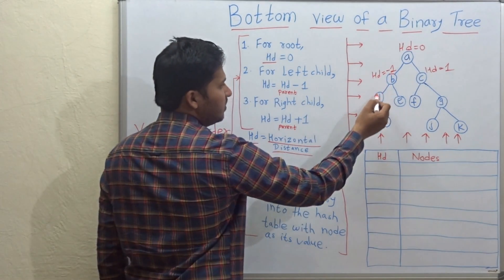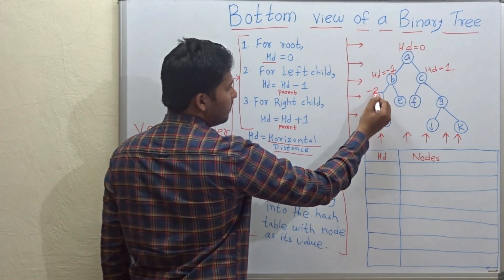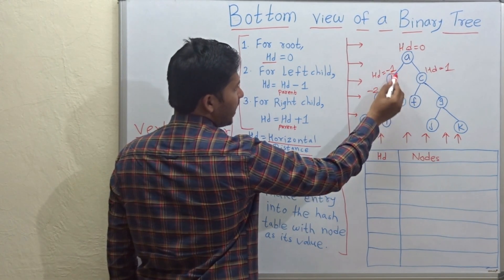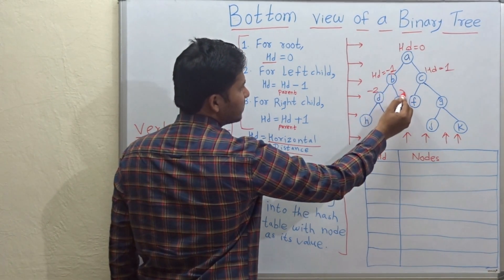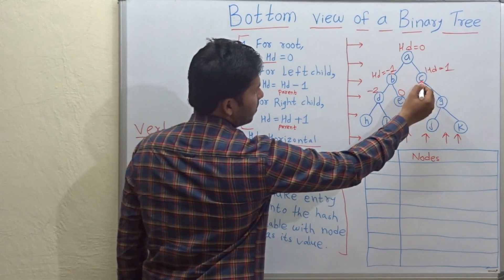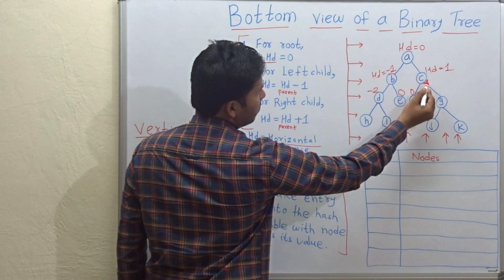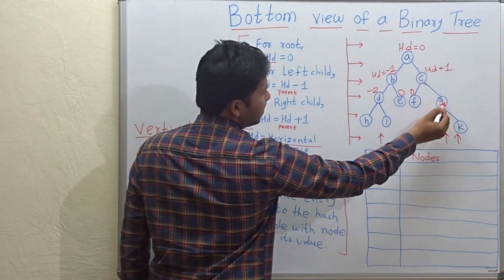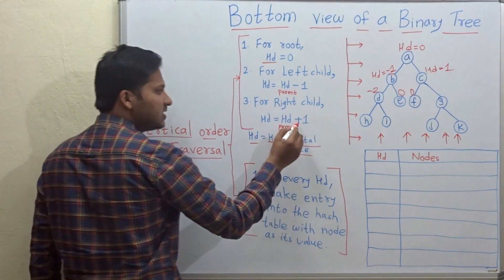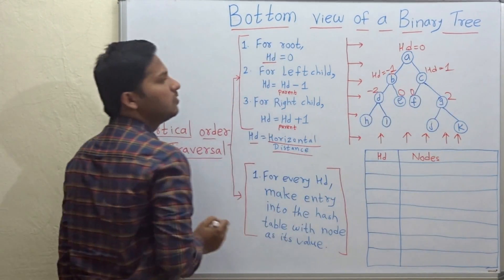Let's assign all the distances. For b's left child d, hd will be minus 1 minus 1 equal to minus 2. For e, hd will be minus 1 plus 1 which is equal to 0. Now for f, hd will be 1 minus 1 equal to 0. And for g, the right child, hd is 1 plus 1 equal to 2.